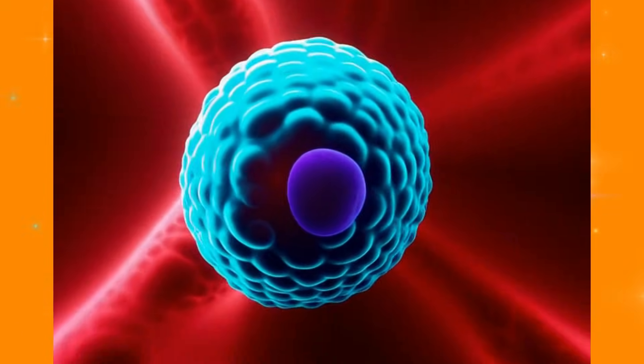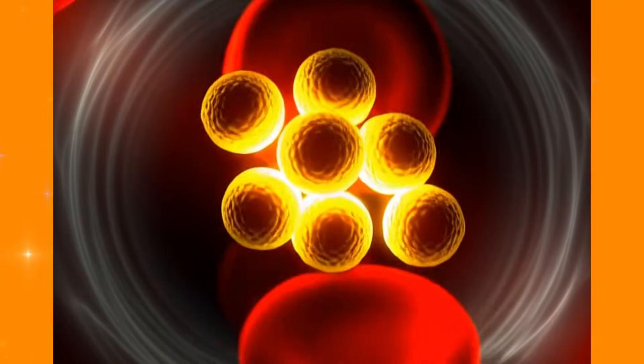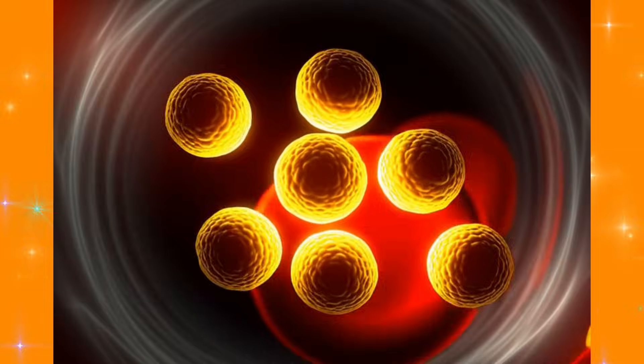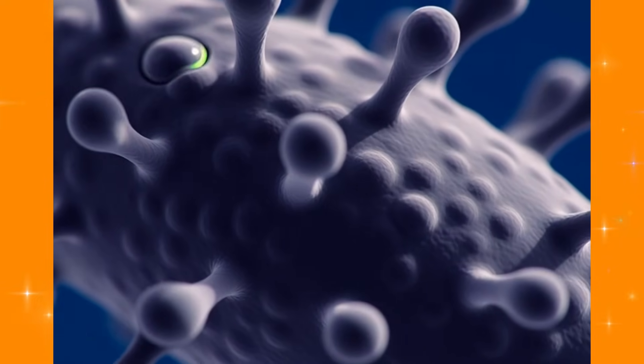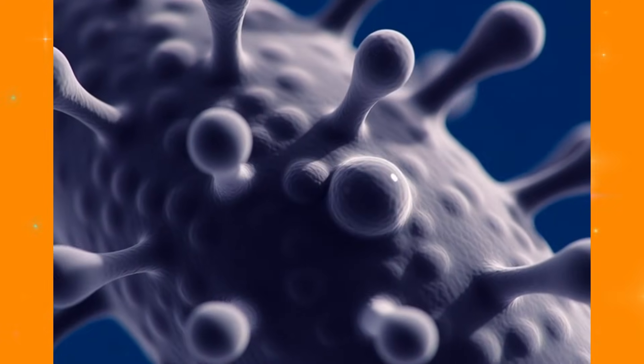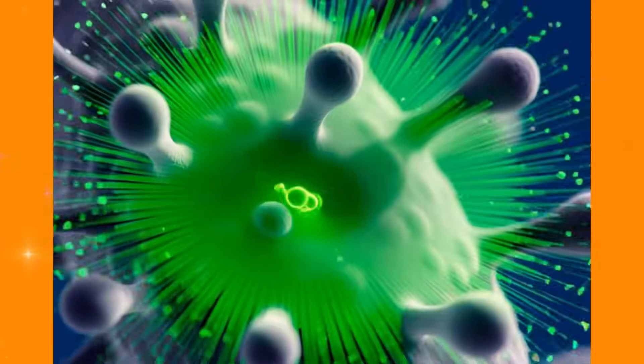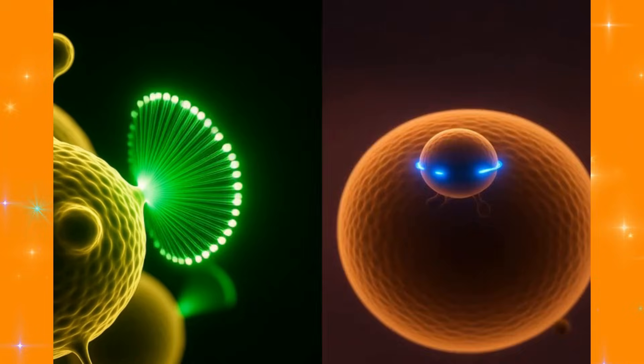Meet the neutrophil, your body's elite soldier. It makes up 60% of your white blood cells and has one mission: seek and destroy. But here's what's remarkable. It doesn't have eyes, yet it can hunt. It doesn't have a brain, yet it makes split-second decisions. How does a single cell become such an efficient killer?